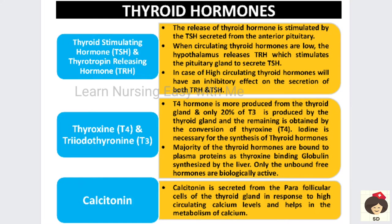When blood thyroid hormones are high, both thyrotrophin releasing hormone and thyroid stimulating hormone will not be produced. Thyroxine is a T4 hormone produced from the thyroid gland, and only 20% of T3 is produced directly from the thyroid gland. The remaining T3 is produced by conversion of thyroxine.